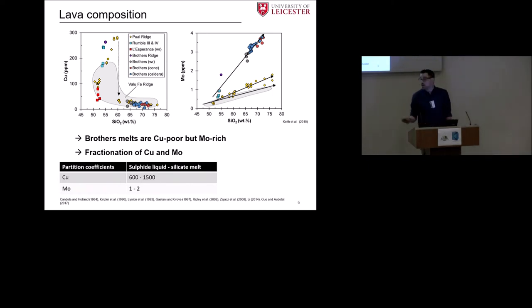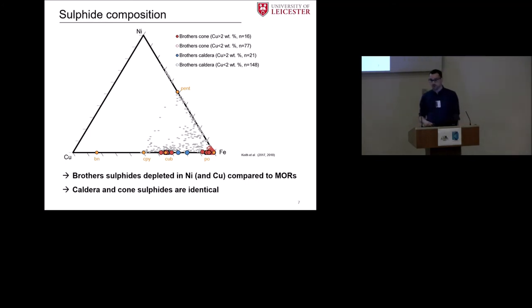If this is true for copper, then when we have a look now on the magmatic sulfide chemistry, then we should obviously find copper-rich sulfides, what we do. We see here in this triangular plot of nickel, copper, and iron. In red, data from the Brothers Cone. In blue, data from the caldera. In the background, the gray lines, the data from magmatic sulfides from mid-ocean ridges. First of all, we see they are poor in nickel compared to the mid-ocean ridges. We have many analyses near stoichiometric pyrrhotite. And then we see we get cubanites, copper-rich phases.